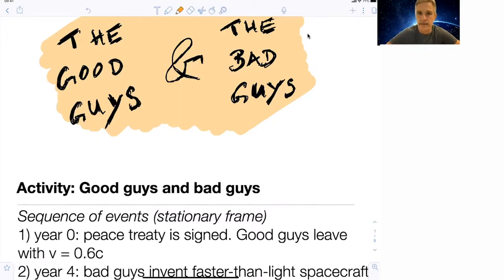We do this with an example about good guys and bad guys. In this example, these two groups were fighting a war, and after a very long and grueling time, they were able to sign a peace treaty.